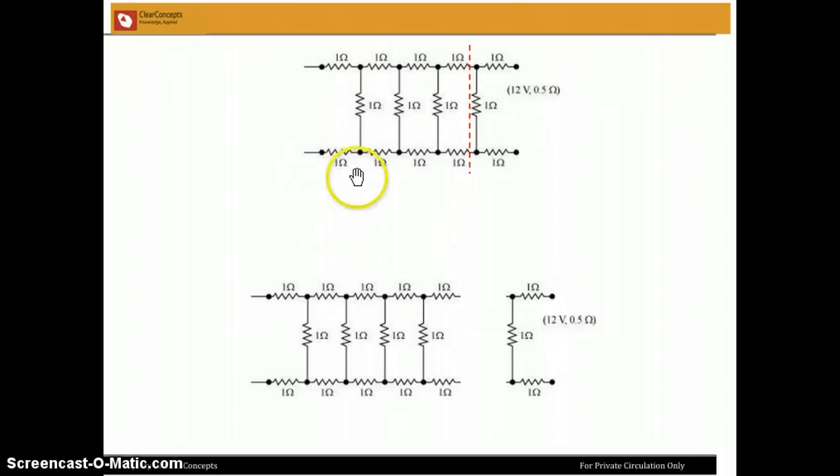So suppose we now say that this network has a resistance of R. Then we must conclude that the network here on the left has a resistance of R.